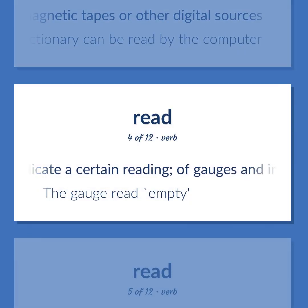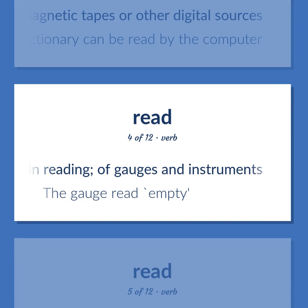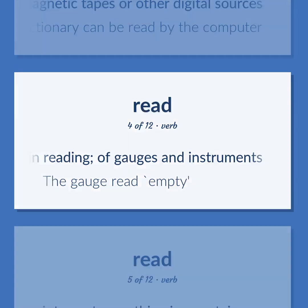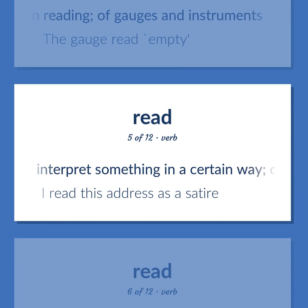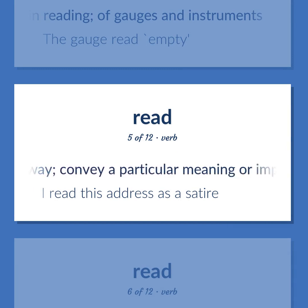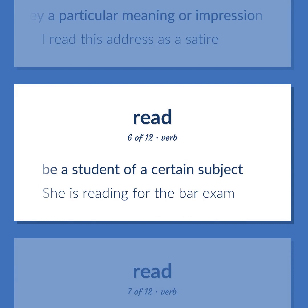Indicate a certain reading of gauges and instruments — the gauge read empty. Interpret something in a certain way; convey a particular meaning or impression — I read this address as a satire. Be a student of a certain subject — she is reading for the bar exam.